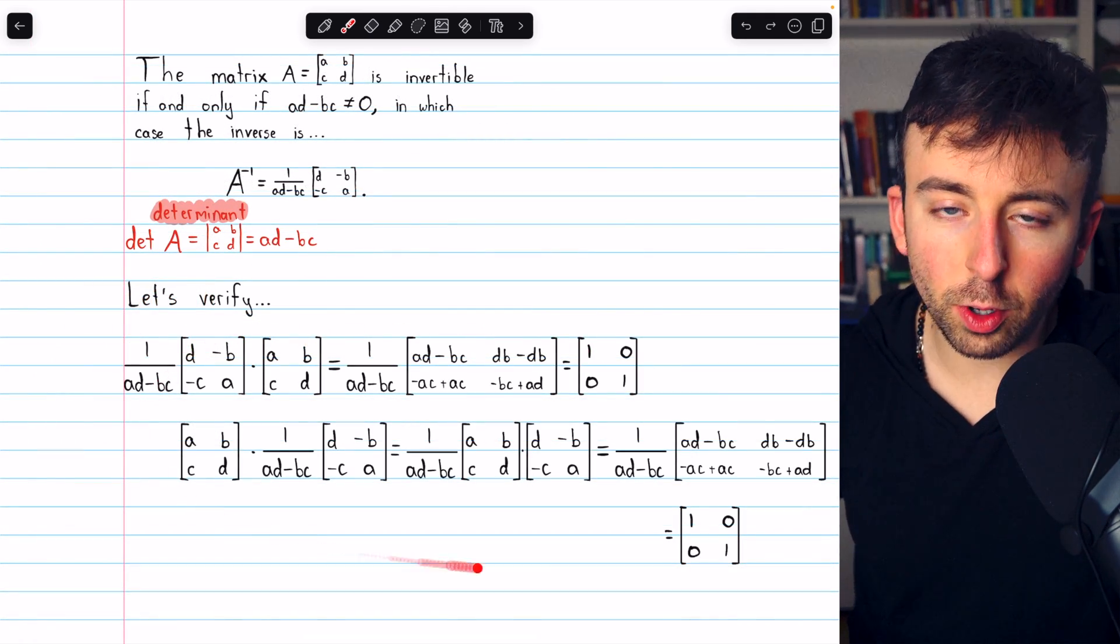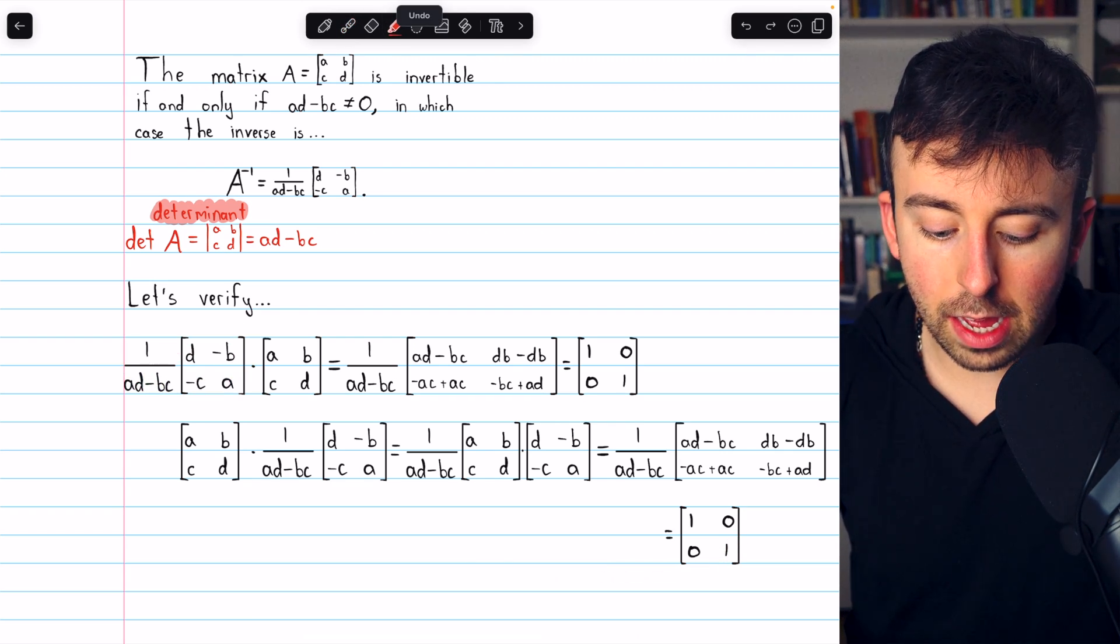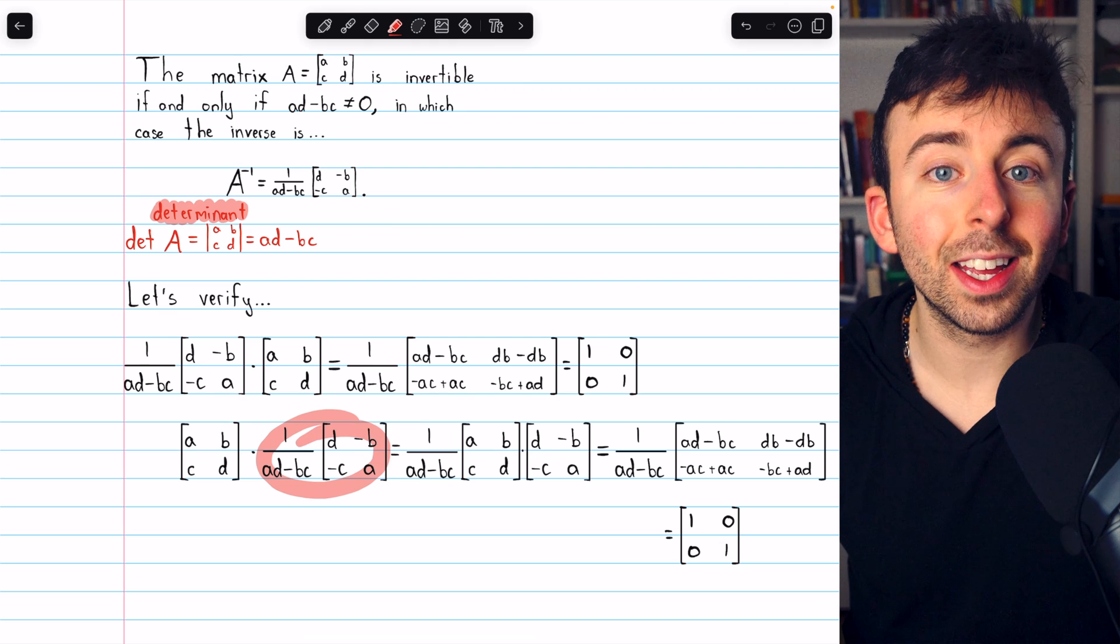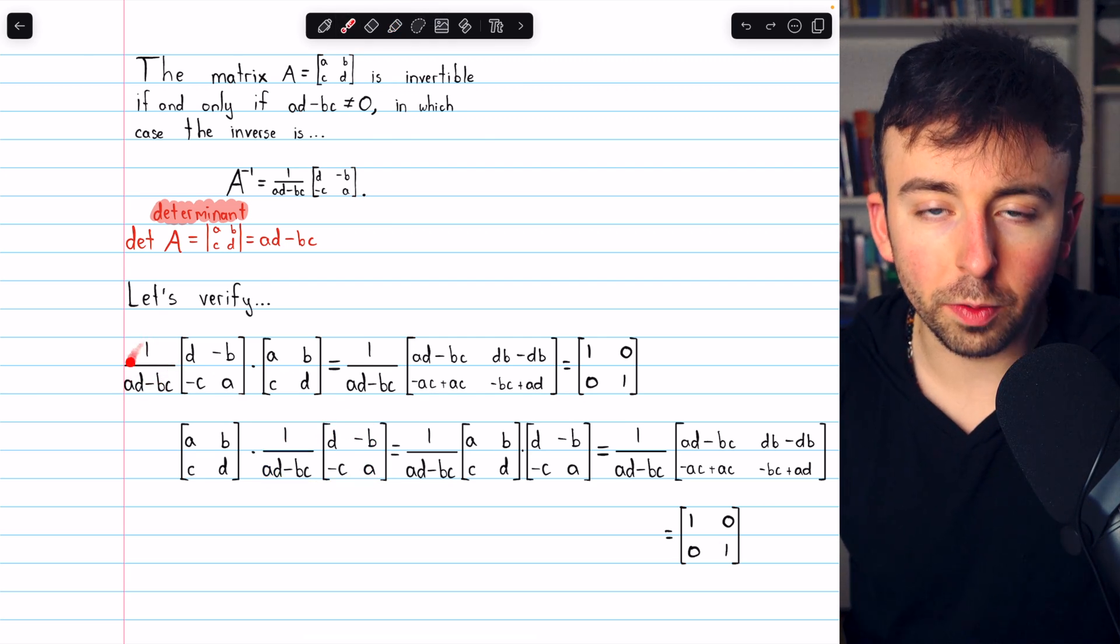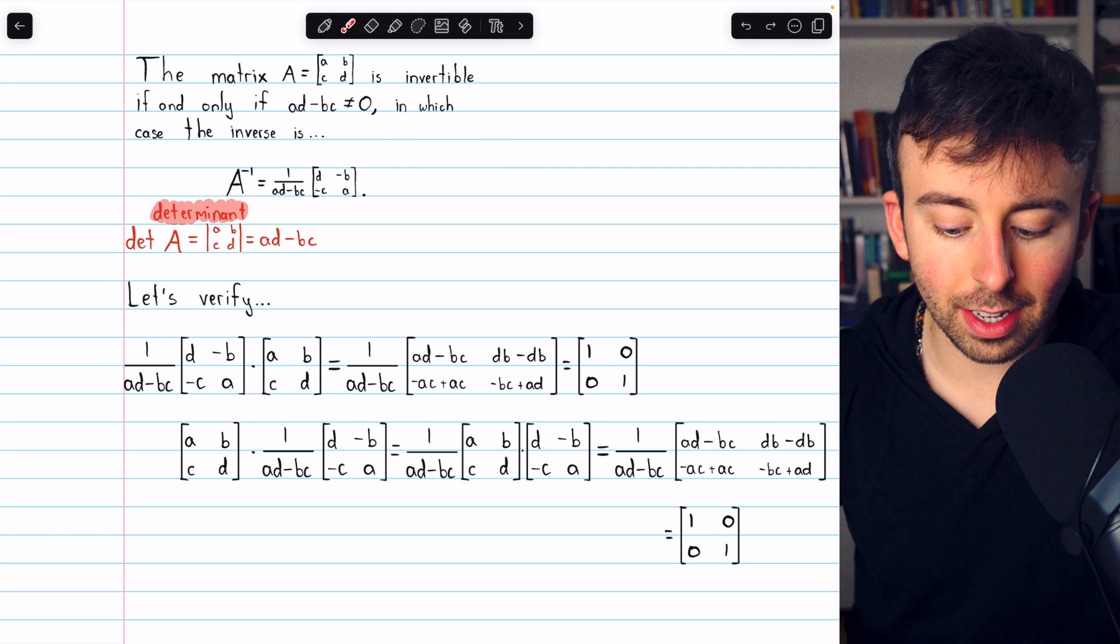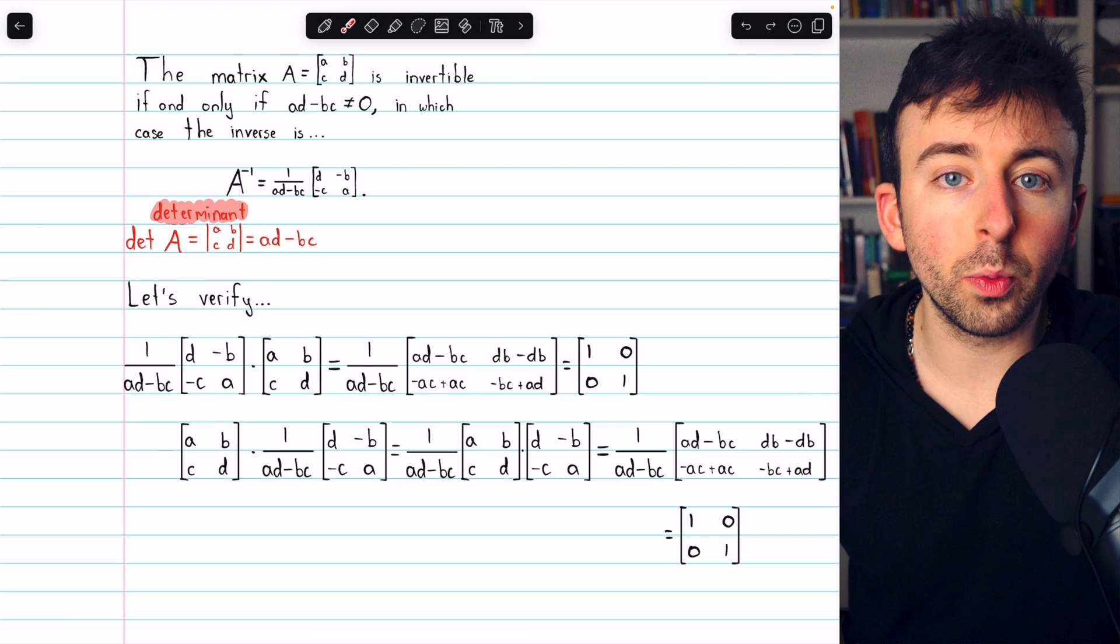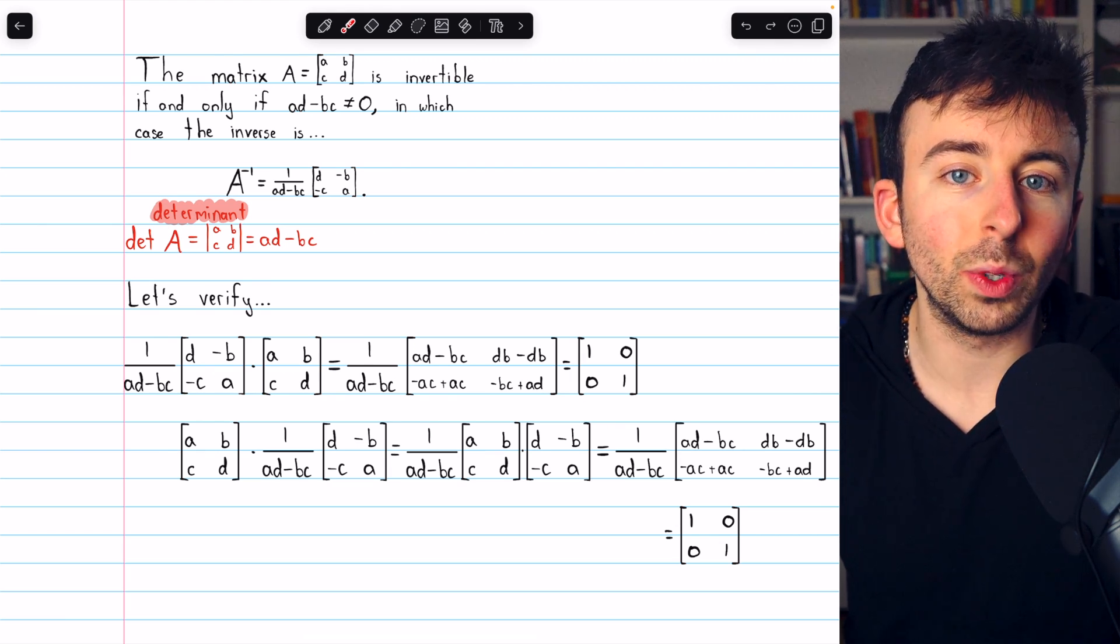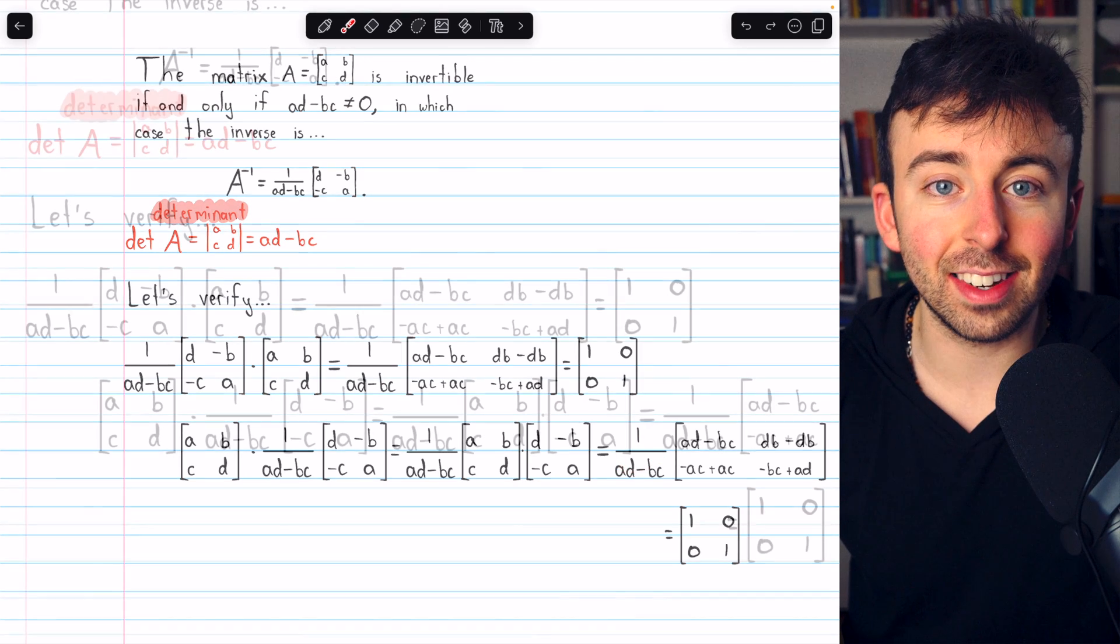Here is the verification of both products, multiplying the inverse on the left and multiplying the inverse on the right. In each case, notice that the scalar, 1 over AD minus BC, I save for the last step of the computation. It is just a scalar, so we can multiply it at whatever point we like.